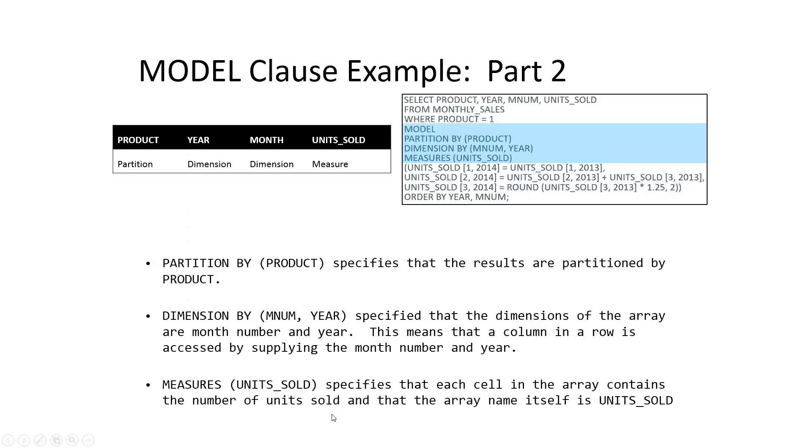In the second part of this statement is where we define our partition, our dimensions, and then the measure that we are interested in. So first off, we're partitioning by product. So product is the only thing that we are interested in right now.